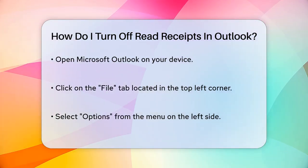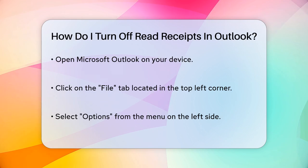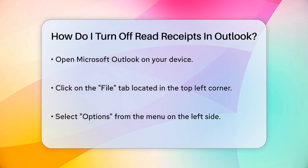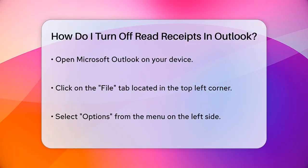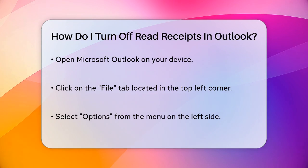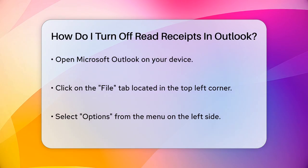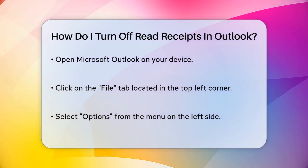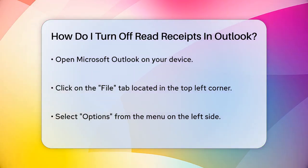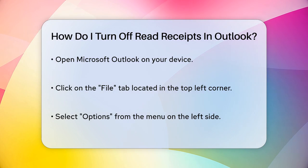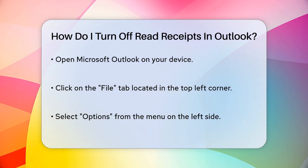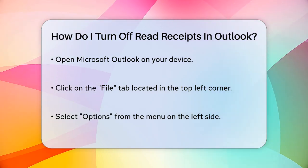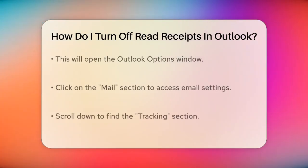First, you need to open Microsoft Outlook. Once it's open, click on the File tab. This is usually located at the top left corner of the screen. Next, select Options from the menu that appears on the left side. This will take you to the Outlook Options window.